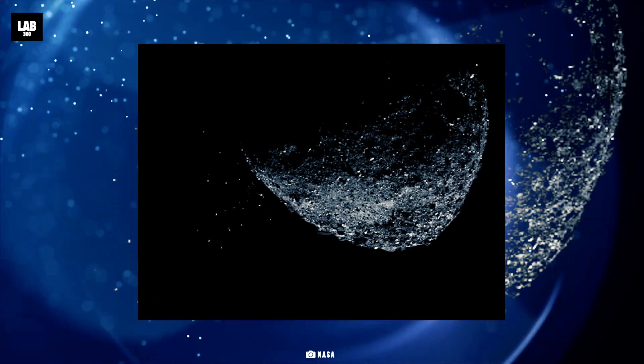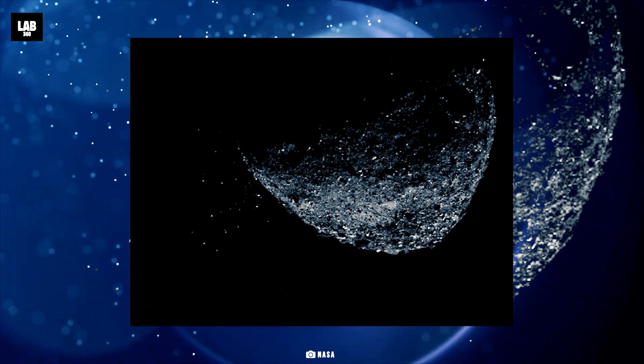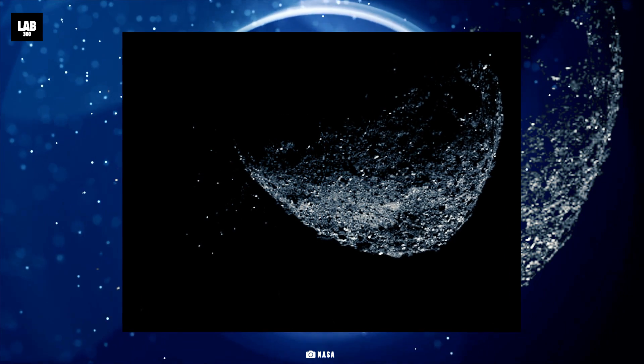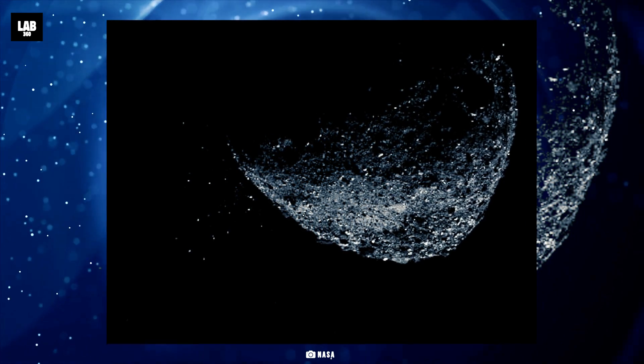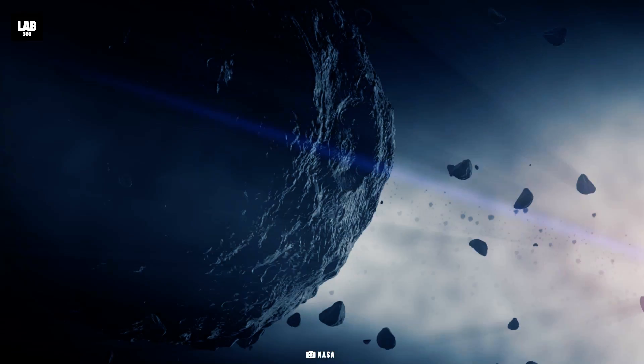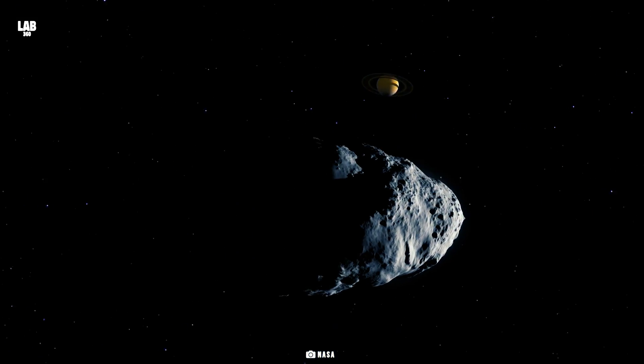According to scientists, Bennu must be a broken chip of a much larger carbon-rich asteroid about 700 million to 2 billion years ago. It is likely to have formed in the main asteroid belt between Mars and Jupiter, and has since then drifted closer to Earth.